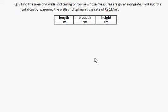Here is the question: Find the area of 4 walls and ceiling of a room whose measures are given alongside, and also the total cost of papering the walls and ceiling at the rate of Rs 18 per meter square. The length is 9 meters, breadth is 7 meters, and height is 6 meters.